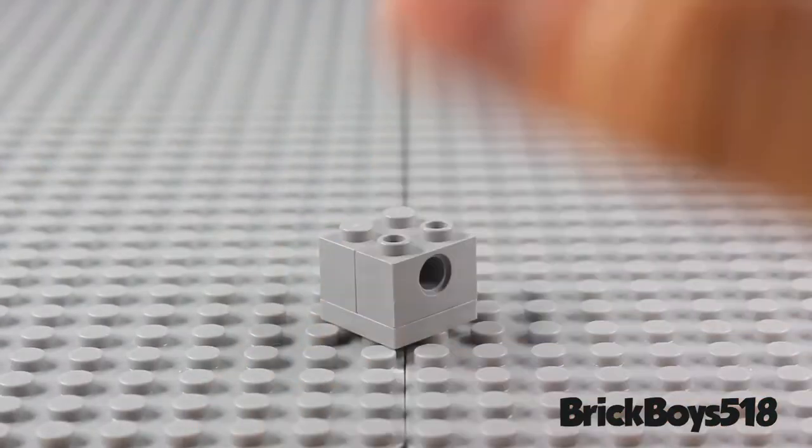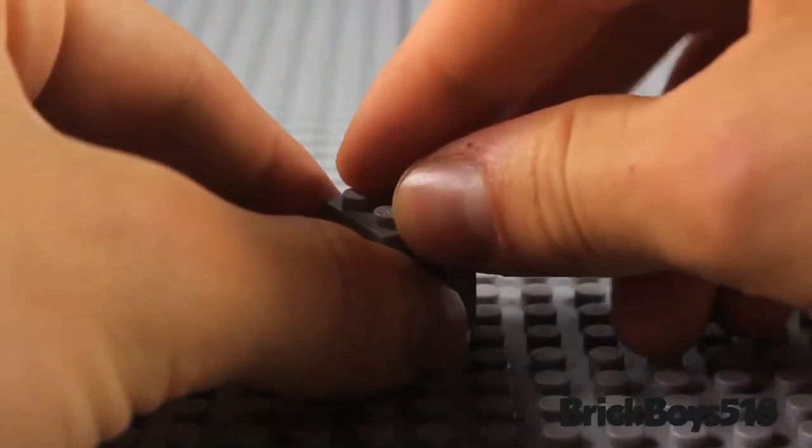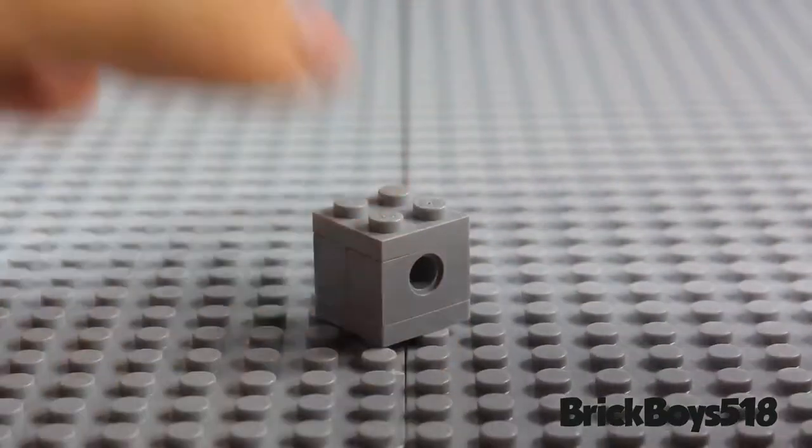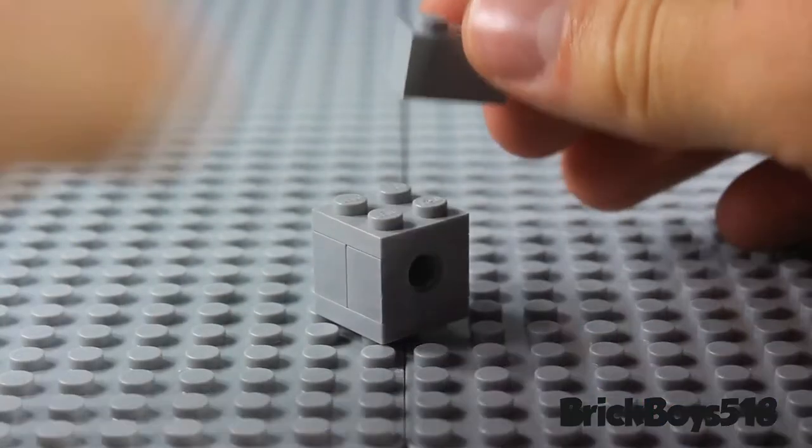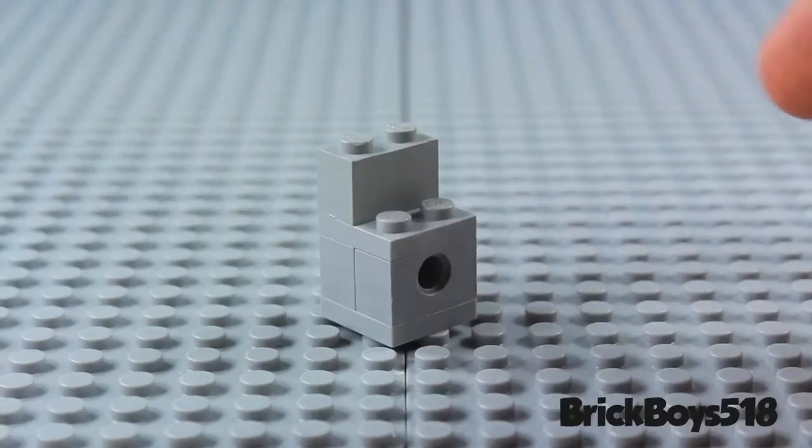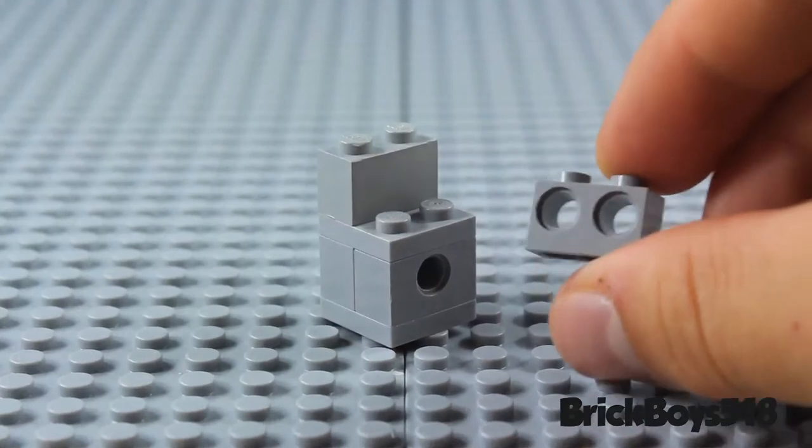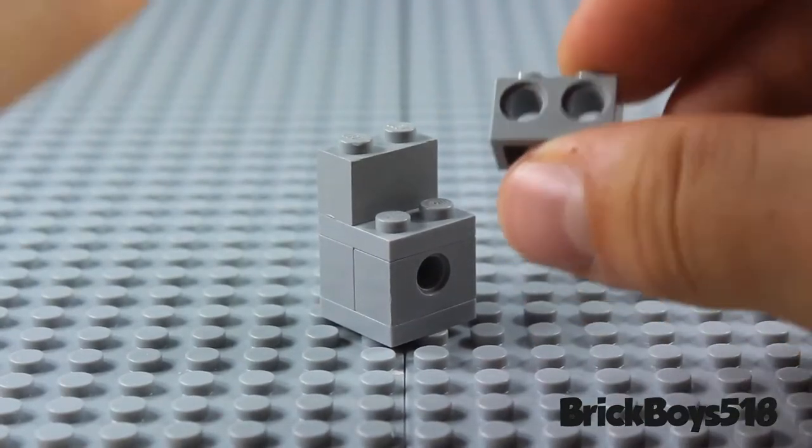And next you're going to take another 2x2 plate, you're going to place that right on top, followed by two more bricks, another 1x2 brick, and then a 1x2 brick modified for a Technic pin, but actually two Technic pins.